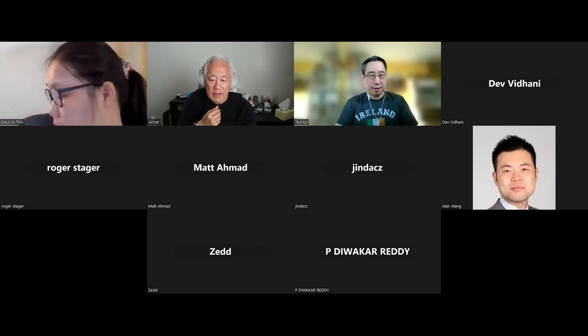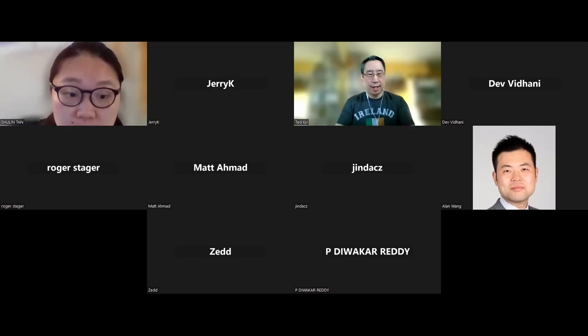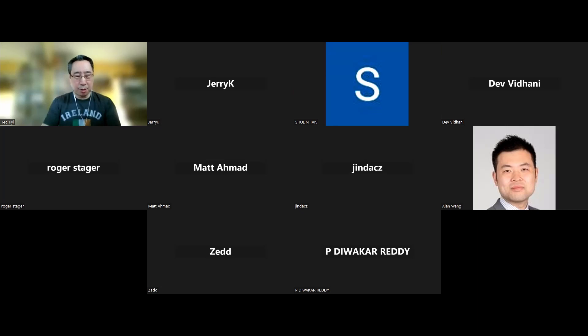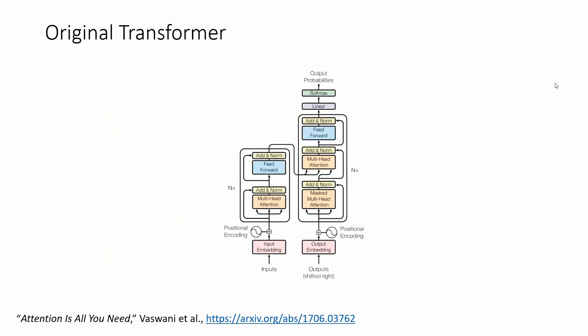Welcome. Today we're going to start talking about Anthropic's transformer circuits work. We'll start with a quick recap assuming most people are familiar with the transformer. This is our famous transformer architecture exactly as it looks in the 'Attention Is All You Need' paper. The orange boxes represent attention mechanisms and the blue boxes represent regular feed-forward neural networks — vector in, some nodes, vector out.